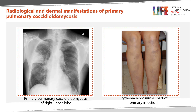The x-ray on the left demonstrates a typical coccidioidal pneumonia in the right upper lobe associated with hilar adenopathy. On the right is a patient with erythema nodosum as part of their primary pulmonary coccidioidomycosis.